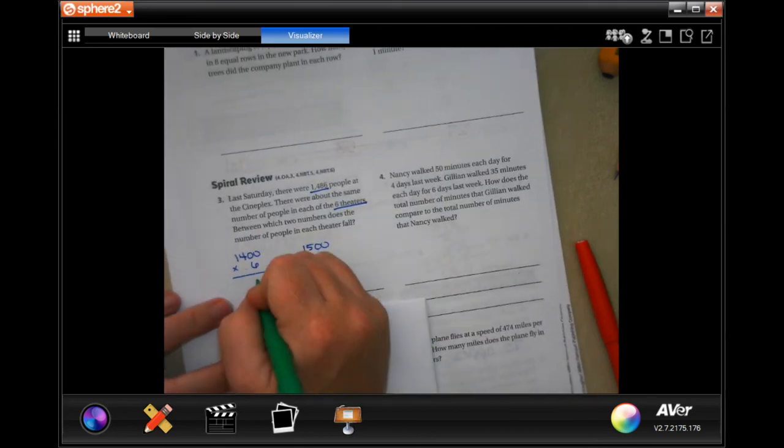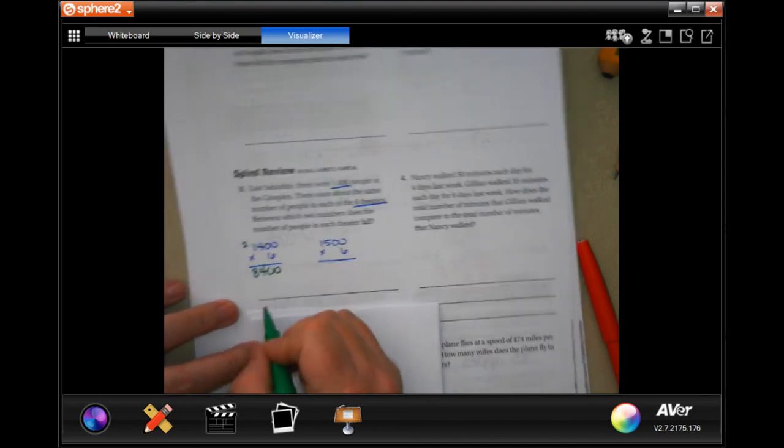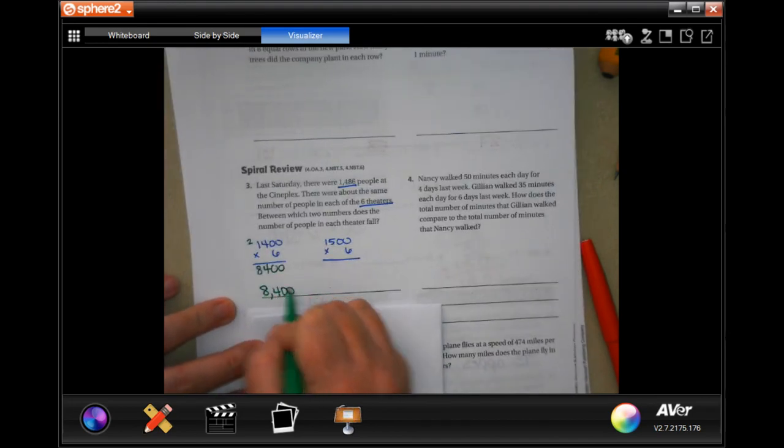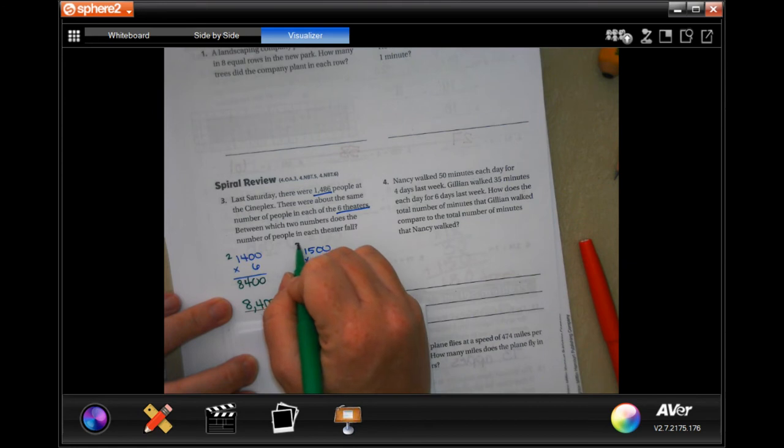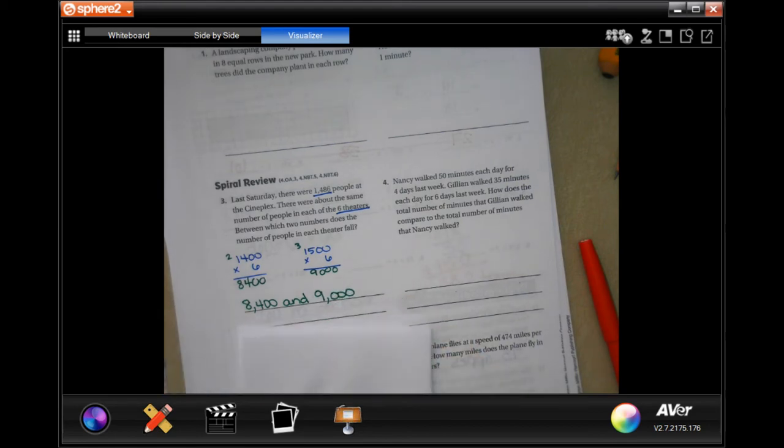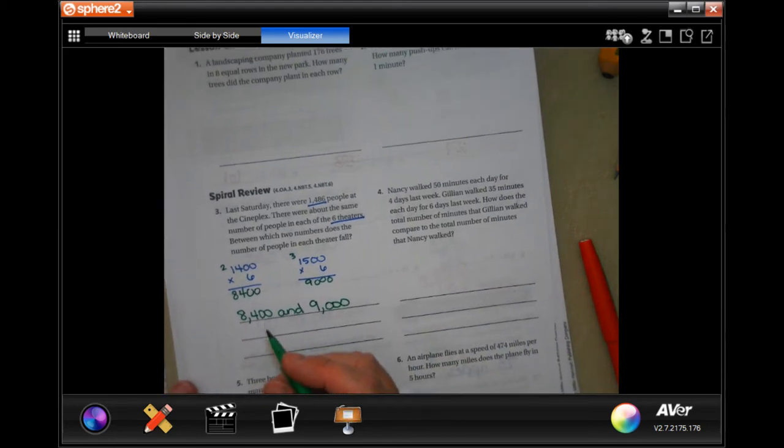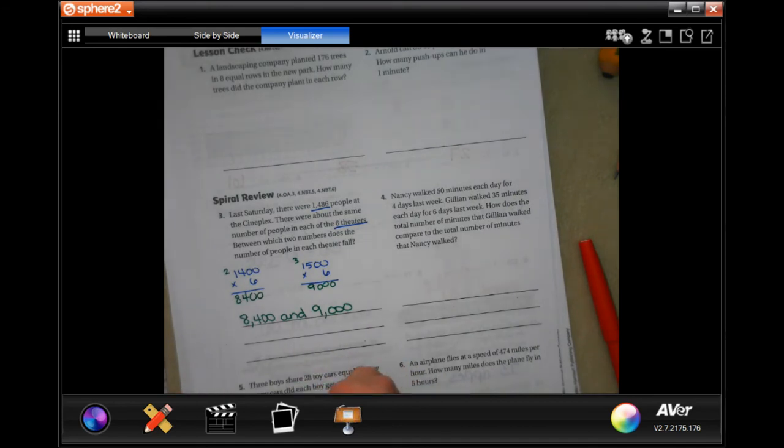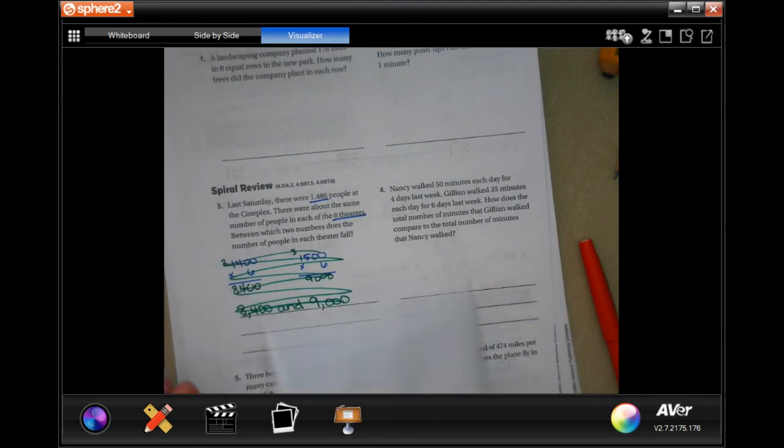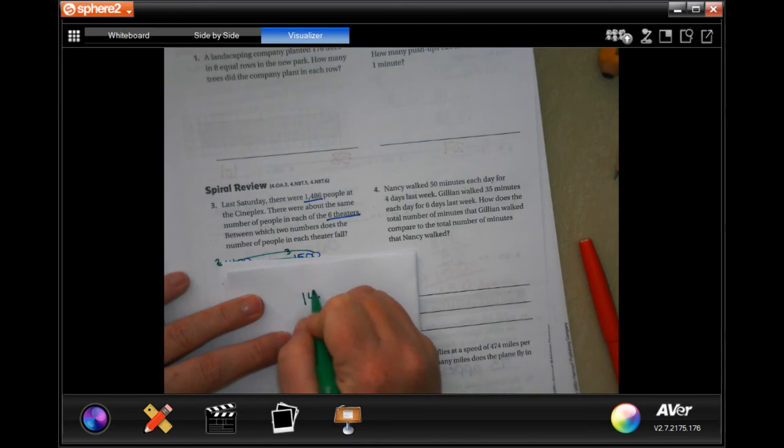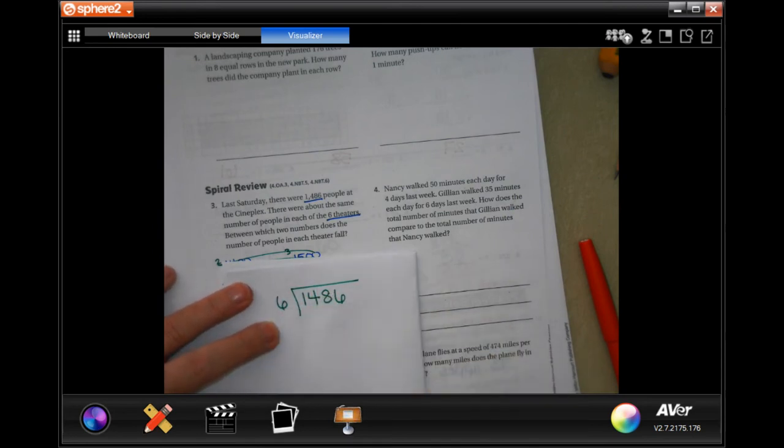So 0, 0, 6 times 4 is 24, carry 6 times 1 is 6, plus 2 is 8. So, 8,400, and 6 times 0, 0, and then 6 times 5 is 30, carry that 3. 6 times 1 is 6, plus 3 is 9. There we go. Oh, yikes, guys, I did that totally backwards, I'm so sorry. So, scratch that, don't write what Miss Lea just wrote.